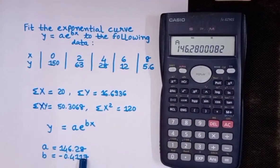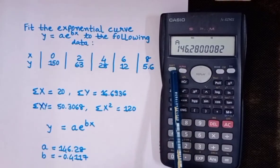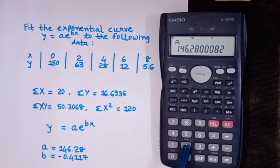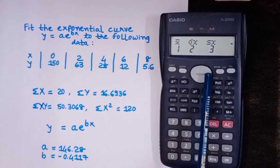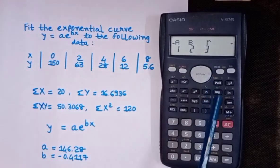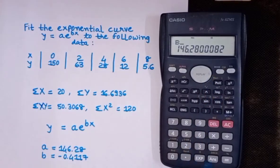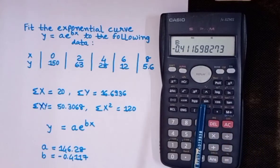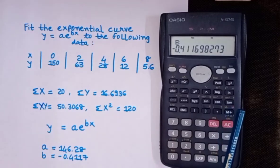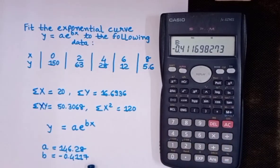So we got a equal to 146.28. Now we'll find out the value of b on the calculator. Press shift, then press 2, from here next, next, press 2, equal to. We get b is equal to minus 0.411698, so b equals minus 0.4117.